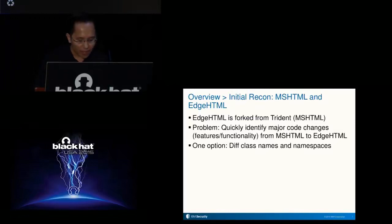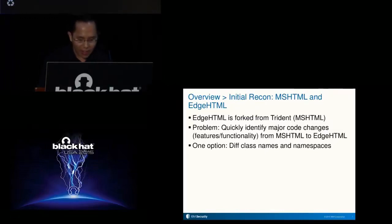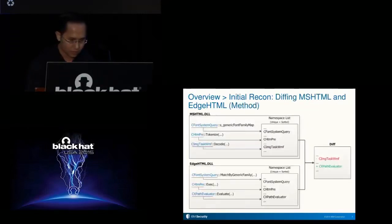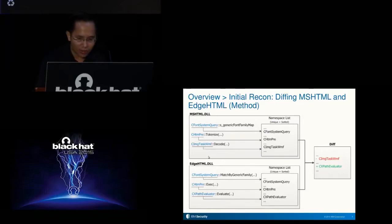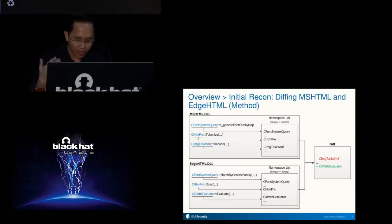Because classes and namespaces suggest grouped related code, which may correspond to a program feature or functionality, diffing them may give us an idea if a feature or functionality was removed or added. Using IDA Python, I wrote a script to enumerate all functions and variable names, then extract their namespace or class portion. I sorted the resulting namespace list, removed duplicates, and dumped the namespace list into a file. Then I diffed the resulting namespace lists using the standard diff tool, and the result will be something similar to this.